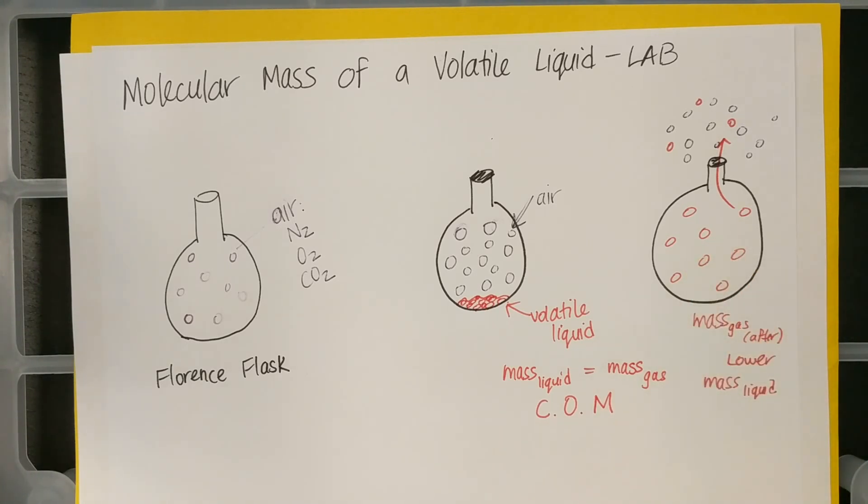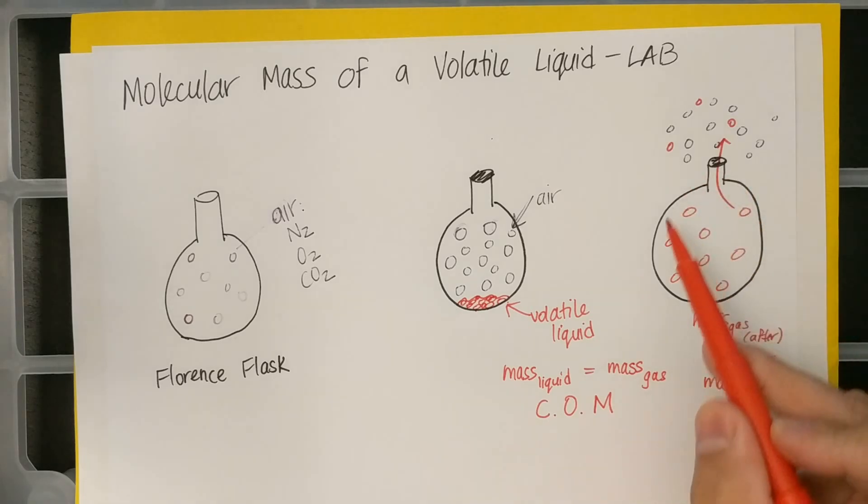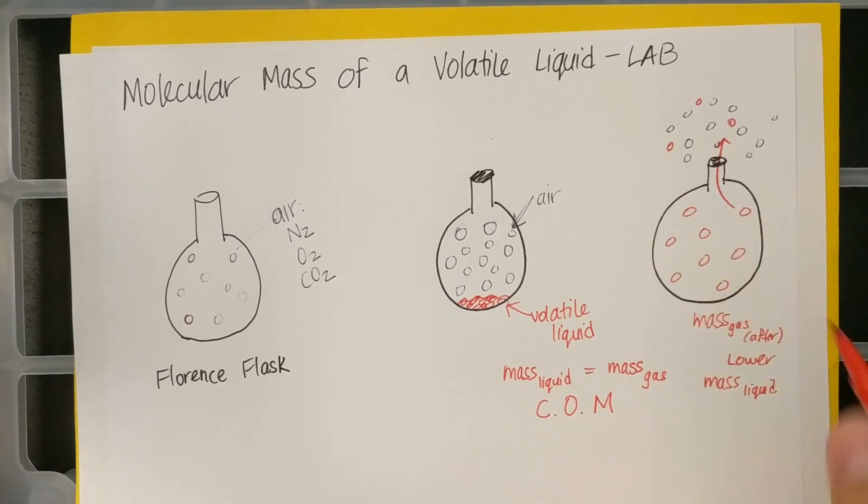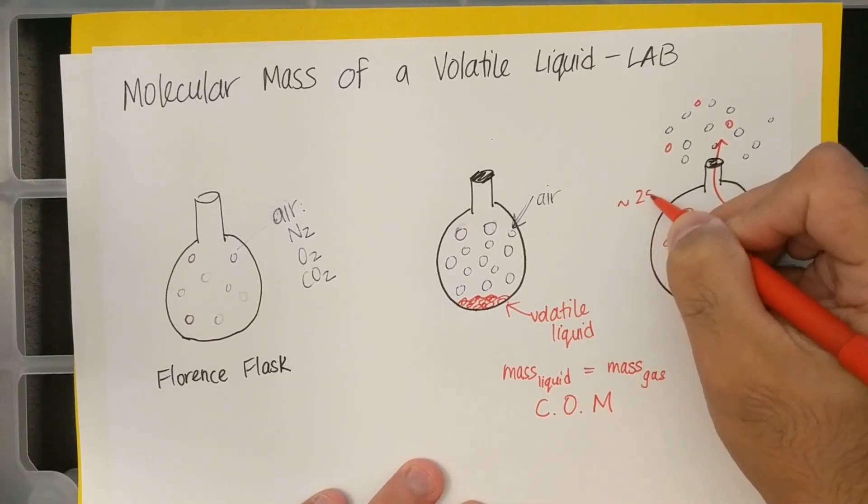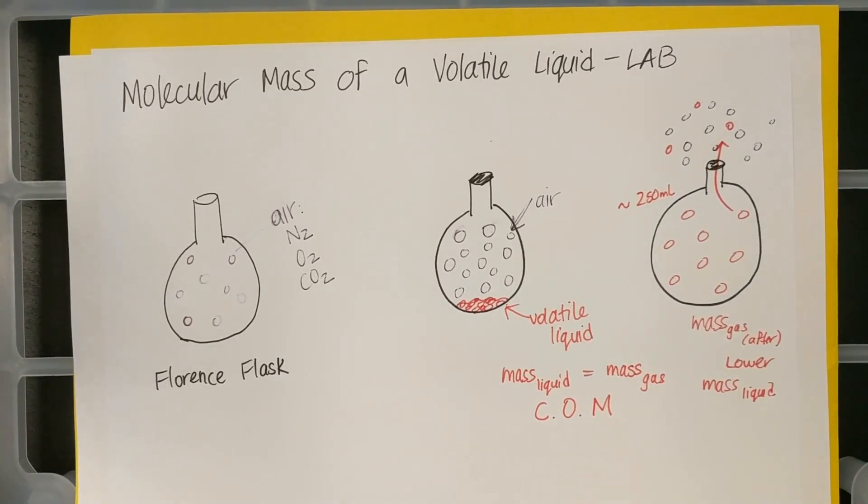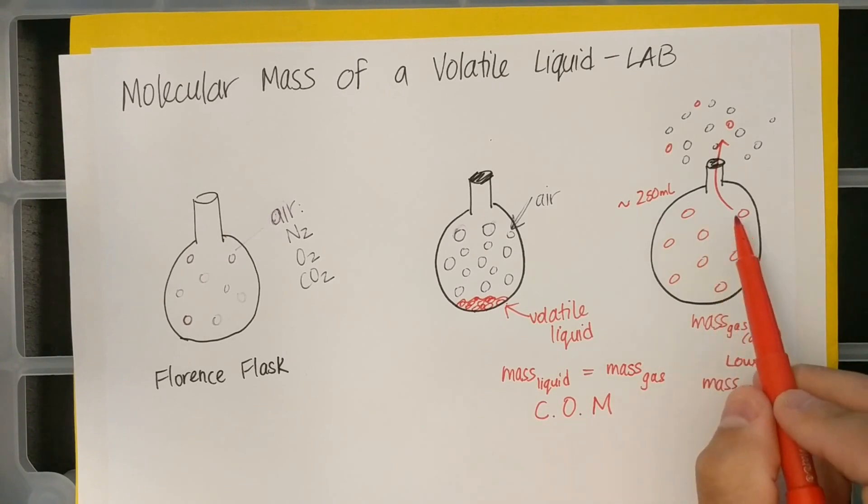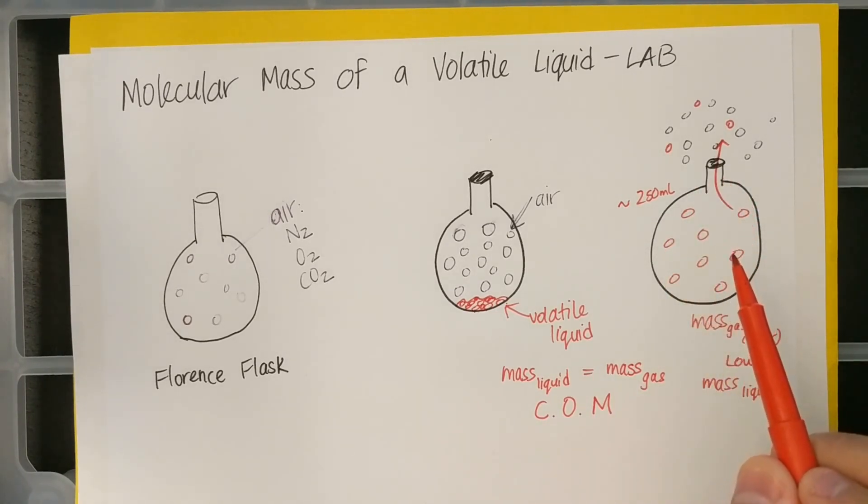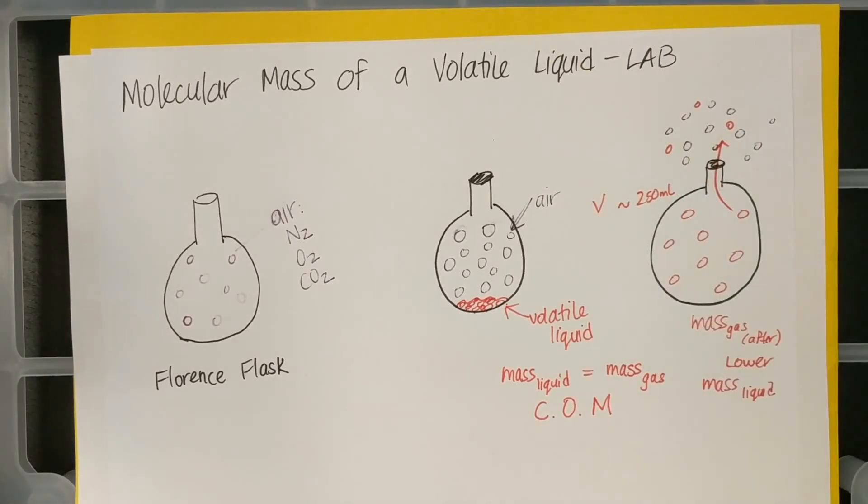And in order for our calculations to work, we need the volume that this gas takes up, which you all discovered was this flask, and it should have been about 250 milliliters. I'm not accepting that answer because you were supposed to get the actual volume by filling this Florence flask up with water and putting it into a graduated cylinder, very similar to the airbag lab.